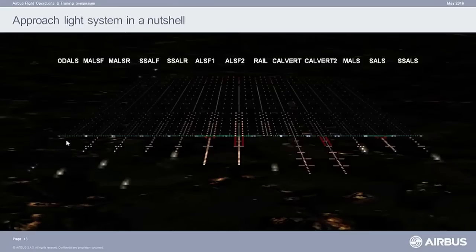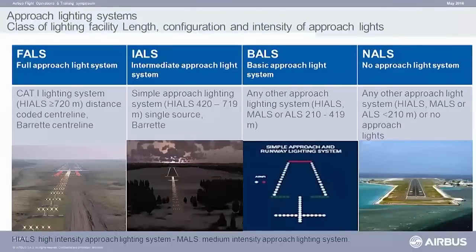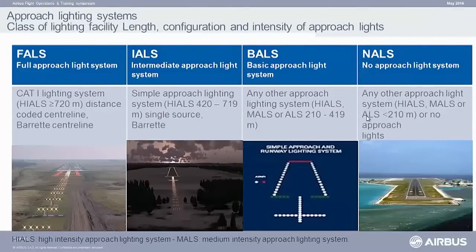So, you see we go from almost no approach light system to a full or basic approach light system that you can find in front of a runway. Based on those approach light systems, in the definition — same in the FAA world — we have the full approach light system, meaning the lighting system is at least 720 meters long. We have the intermediate one between 420 and 720 meters, a basic one between 210 and 420 meters, and if you have less than 210 meters of approach light system, regulation-wise, it's like having no approach light system.